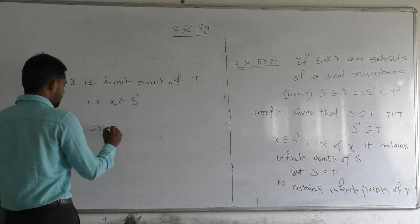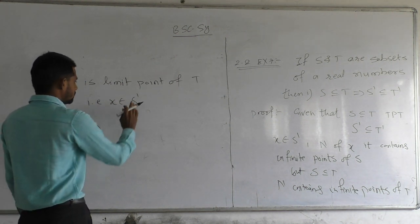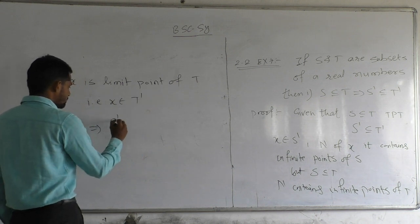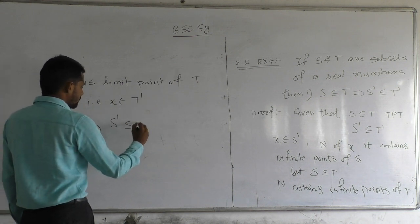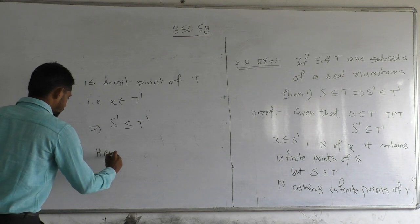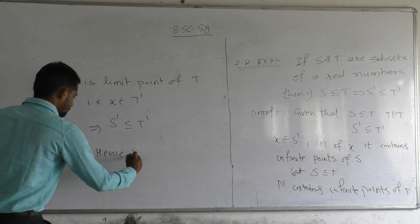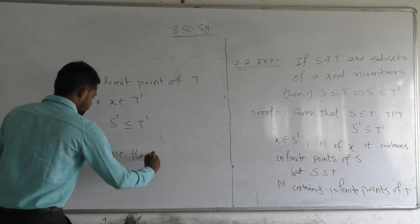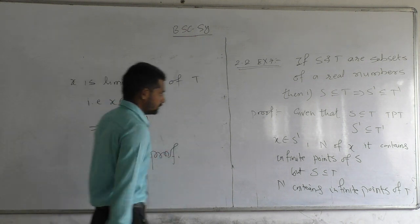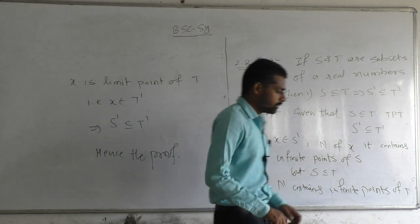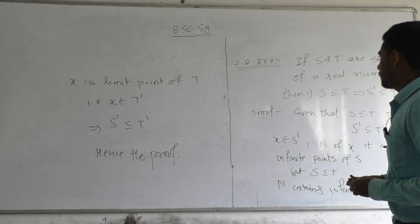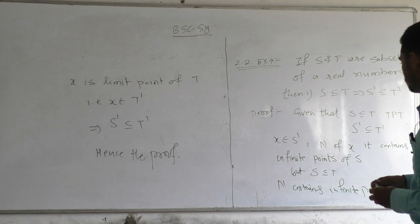Since x was arbitrary, this implies S dash is contained in T dash. Hence the proof. So this is the proof of Example 7.